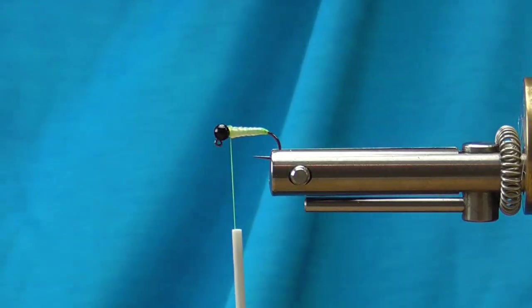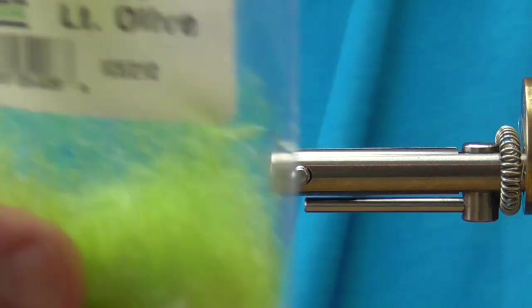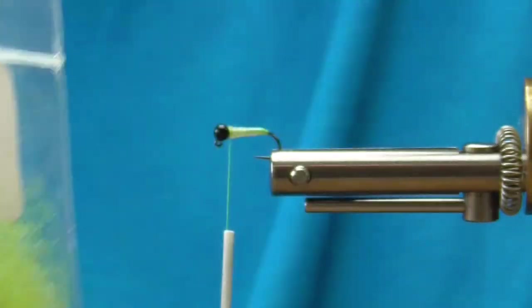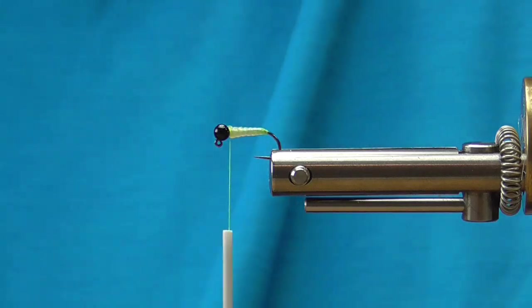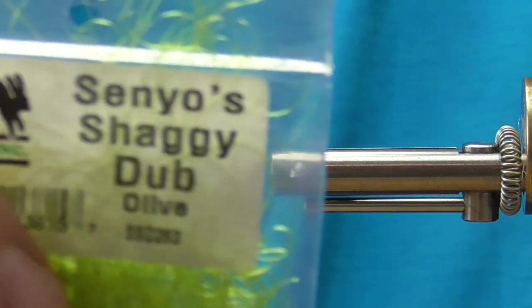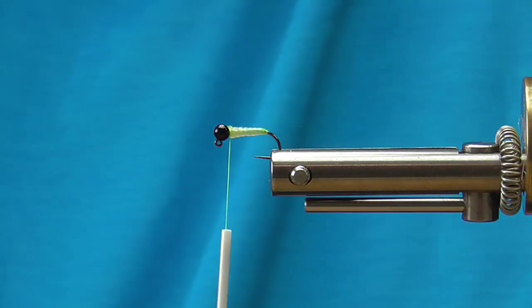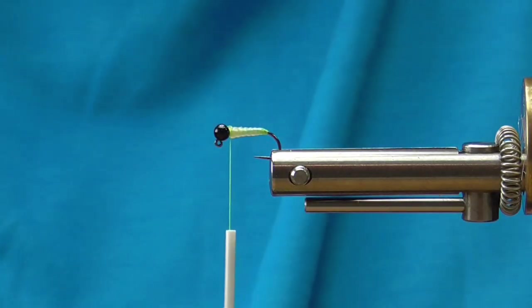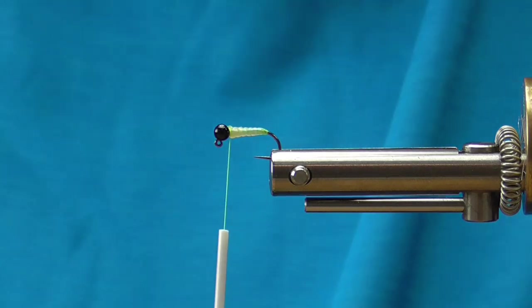Trim that piece off. The next material I'm going to grab is just the slightest bit of this UV ice dub in a light olive. And then I'm also going to grab a pinch of this Senyo's shaggy dub in olive.